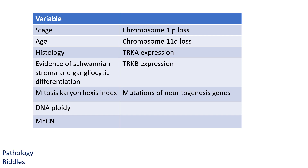Additional favorable prognostic factors: MYCN not amplified, no loss of chromosome 1p or 11q, TrkA expression present, TrkB expression absent, and absence of mutation in neurogenesis genes. That is all for today — please like, share, and subscribe. Till we meet next time, this is Dr. Baseman signing off.